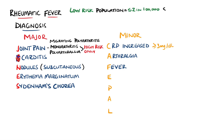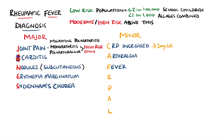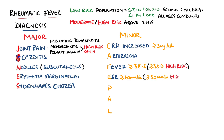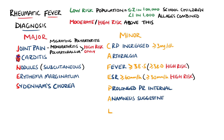A low-risk population is considered when there are 2 or fewer cases per 100,000 in school-aged children, or less than 1 in 1,000 in all ages combined. Anything above this is considered moderate to high risk. F is for a fever — 38.5°C being the cut-off for low-risk populations, or 38°C if they are high-risk. E is for a raised erythrocyte sedimentation rate, which is 60 or more millimetres per hour in low-risk populations, or 30 millimetres per hour in high-risk populations. P is for a prolonged PR interval, and A is for anamnesis, meaning a history suggestive of rheumatism.